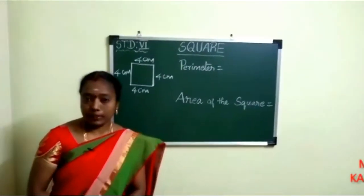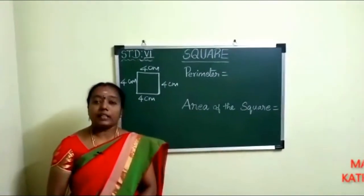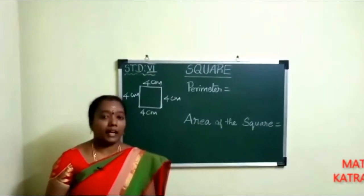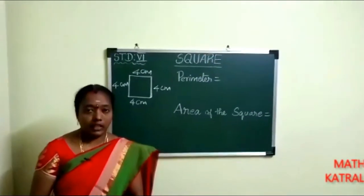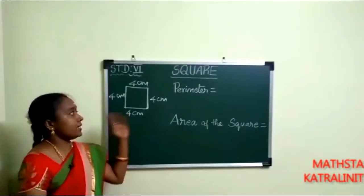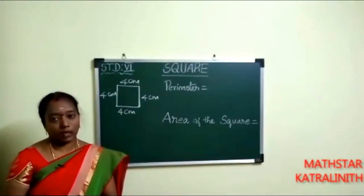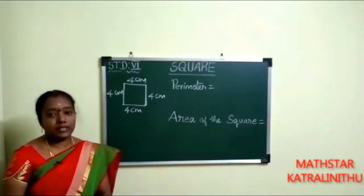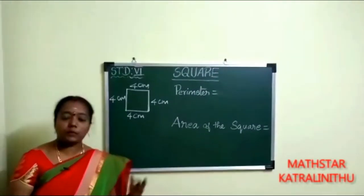Good morning students, welcome to my channel Mathstar Katralinithu. I extend my warm Saraswathi Poojai greetings to all students. Today we are going to see about standard 6 square shape. We already saw that a square has 4 sides and 4 corners.